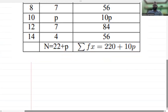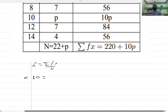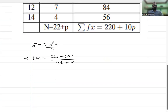Summation Σfx gives 220 plus 10P. We have to use the formula: X̄ equals Σfx upon n. X̄ is 10. Summation Σfx is 220 plus 10P, and n is divided by 22 plus P.